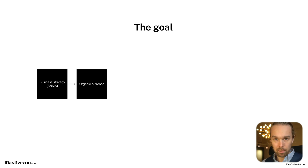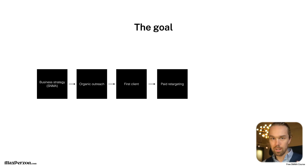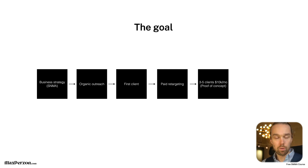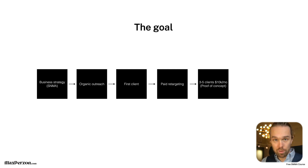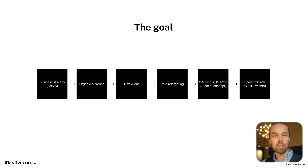Once you have that in place, you start with organic outreach — I have a ton of videos on this channel on how to do that. You get your first client, then start to reinvest around $10 per day or $300 per month into paid retargeting. You continue with organic outreach and paid retargeting until you have your first three to five clients. That's your proof of concept — meaning what you're selling is actually needed in the market, and you have clients who have paid you money and are happy with your service.